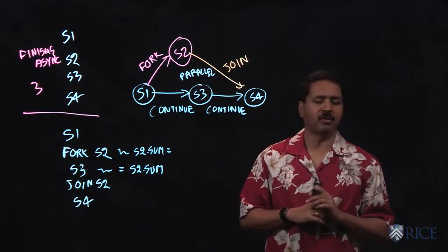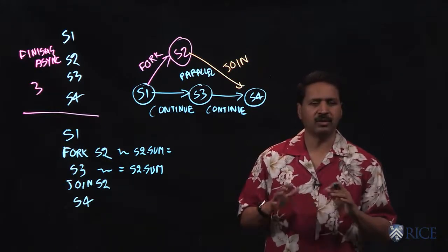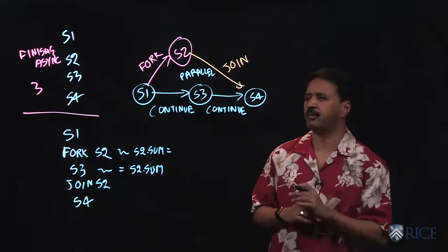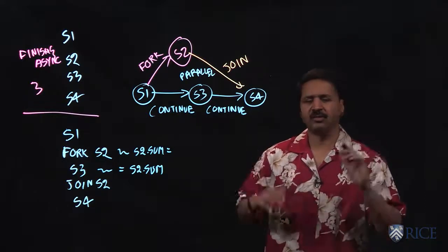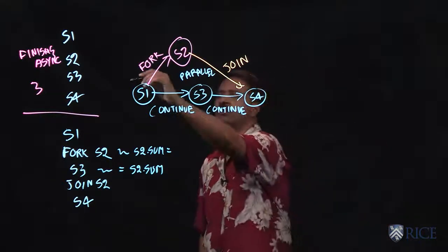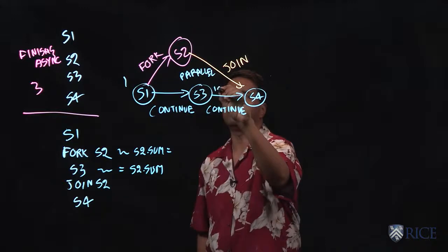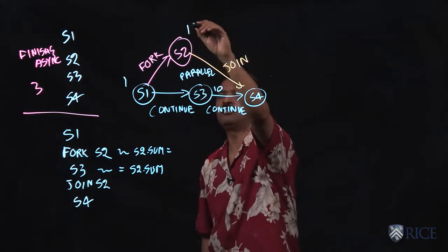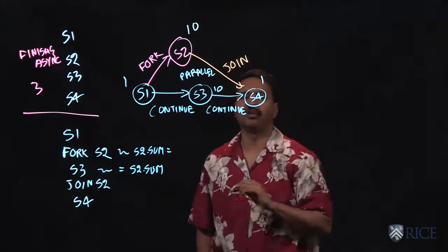Another very interesting property of computation graphs is that we can use them to reason about the performance of your parallel program. So let's just say in abstract units s1 took one unit of time, s3 takes 10, s2 takes 10, and s4 takes 1.